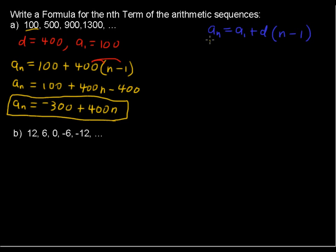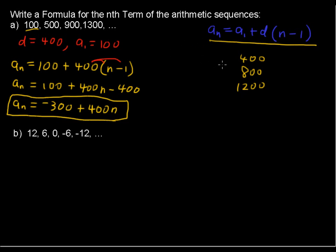The reason this general form works is that we start with the first term, then add some multiple of the difference — either 400, 800, or 1200 — onto that initial term. It's n minus 1 so that we don't add the difference right away on the first term. If we used difference times n, we'd add 400 immediately onto 100, and that wouldn't give us our first term.